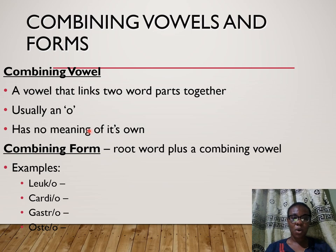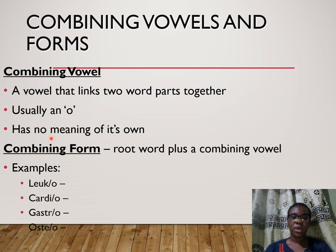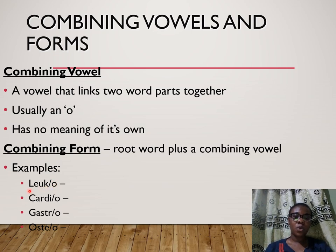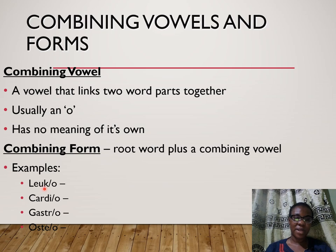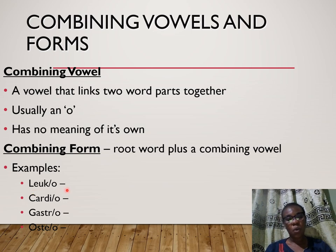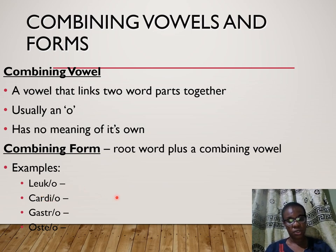For combining vowels and forms: a combining vowel usually links two word parts together, and the most common one is 'o'. It has no meaning of its own. A combining form is a root word plus a combining vowel — these two together make a combining form; the 'o' alone is the combining vowel. For example, 'leuco' — as regards white cells — the 'o' is just a vowel that means nothing. It allows the word to be easily pronounced, like 'leukocytosis', 'cardiology', 'gastrostomy', 'osteophytes'.